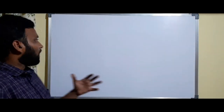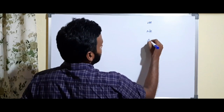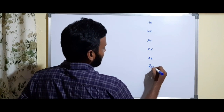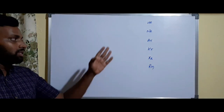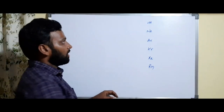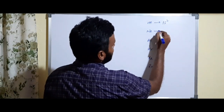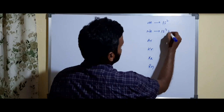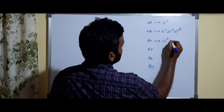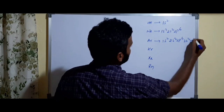Let's see one by one. Some elements we have like helium, neon, argon, krypton, xenon, and radon. These are the elements which we call as noble gases or inert gases. Helium has 1s², neon has 1s², 2s², 2p⁶. Argon is 1s², 2s², 2p⁶, 3s², 3p⁶.